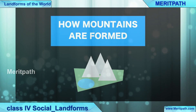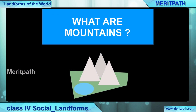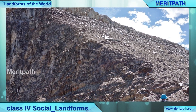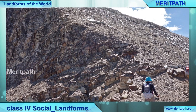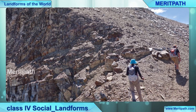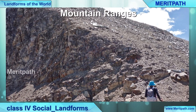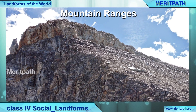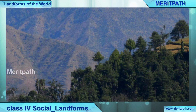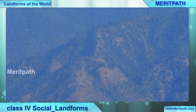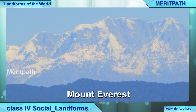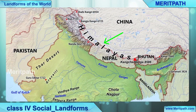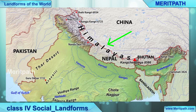How mountains are formed, and what are mountains? Mountains are the rocky masses of land that rise higher than the surroundings. They have very steep slopes and high peaks, and usually occur in long rows called mountain ranges. For example, the Himalayas in northern India. Mount Everest is said to be the highest mountain peak in the world, located in the Himalayas in Nepal.